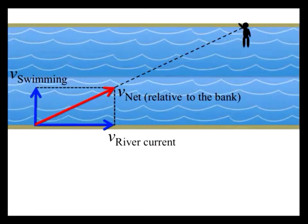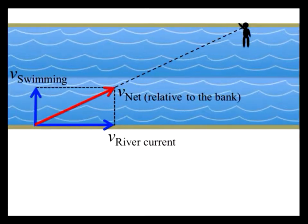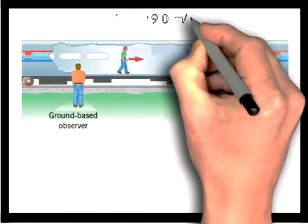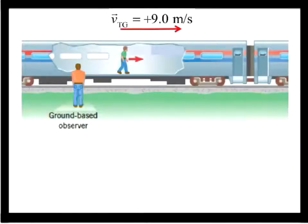Let's look at a simpler example, where the velocity vectors are collinear. Imagine a train traveling along a set of straight railroad tracks at a constant speed of 9 meters per second relative to an observer at rest on the ground.